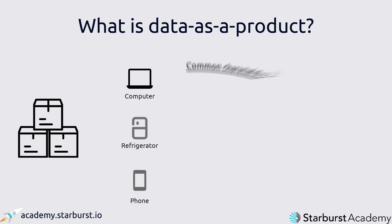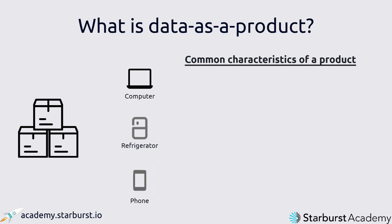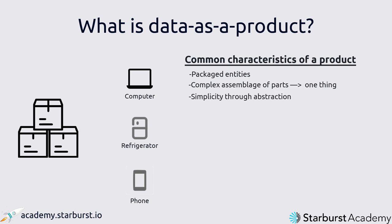Here's what we know. They were all purchased and interacted with as packaged entities. We didn't have to construct our refrigerator from spare parts. And although we might have constructed our computer from individual components, we certainly didn't manufacture the chips and transistors ourselves. Instead, we interacted with a complex assemblage of parts, largely as one thing. Why do we do this? Because it's simpler. Imagine how difficult it would be to create everything we buy from scratch and interact with it one by one. This brings us to the next point: decisions.